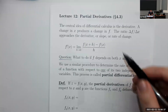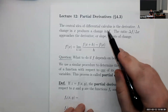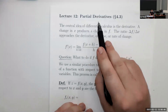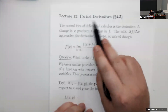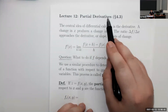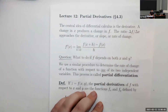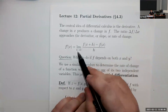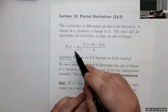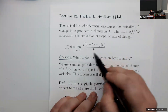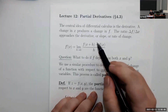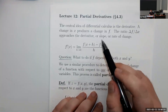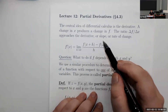What we're going to learn today is the multivariable equivalent of the derivative called the partial derivative. Let's remind ourselves what the single variable derivative is and use that as an inspiration to make a definition for the multivariable derivative.